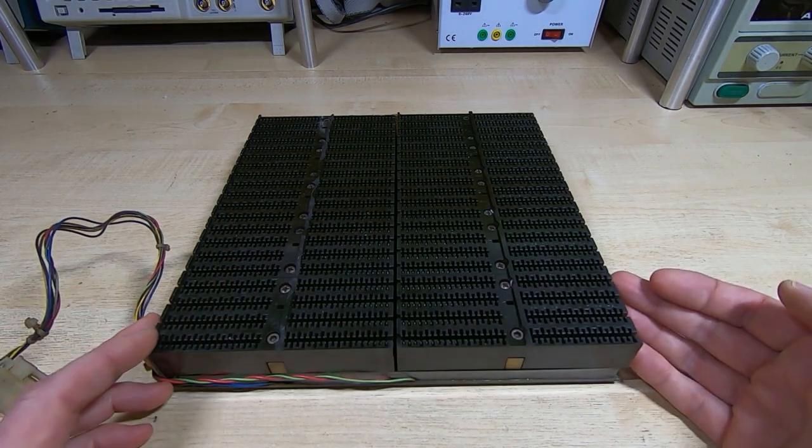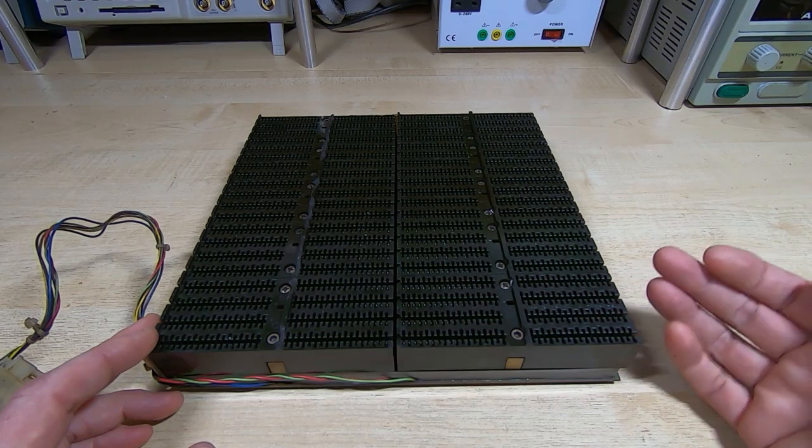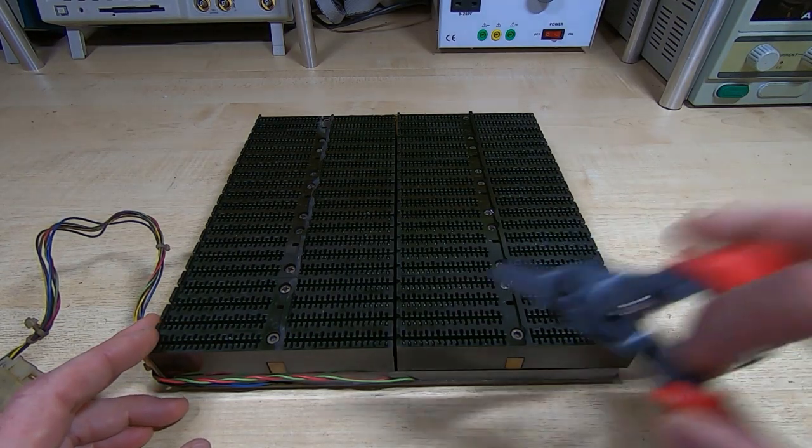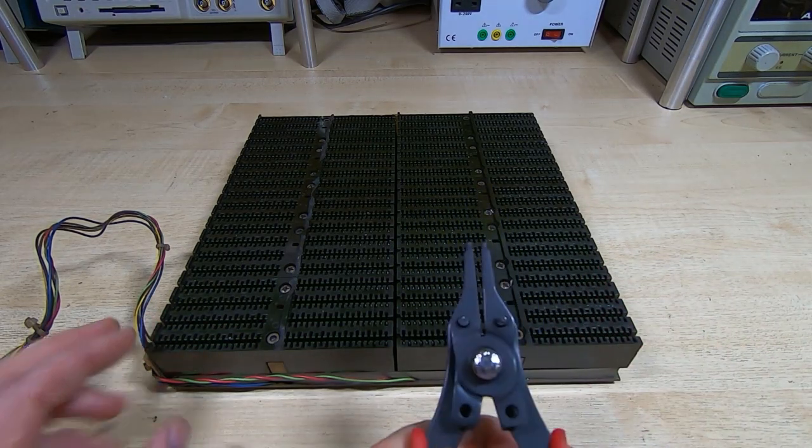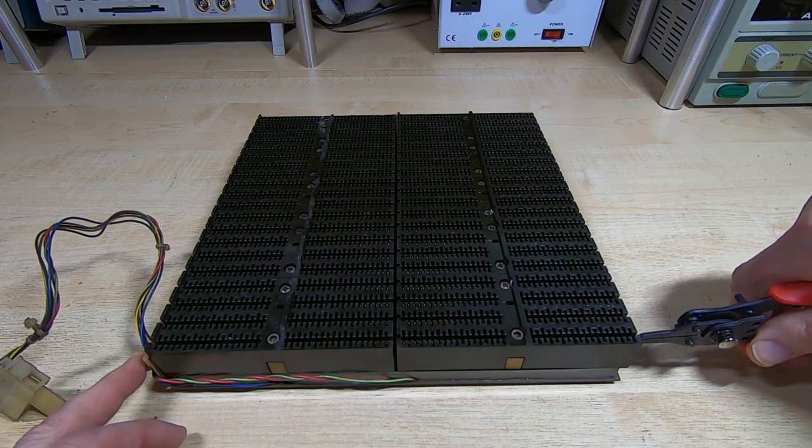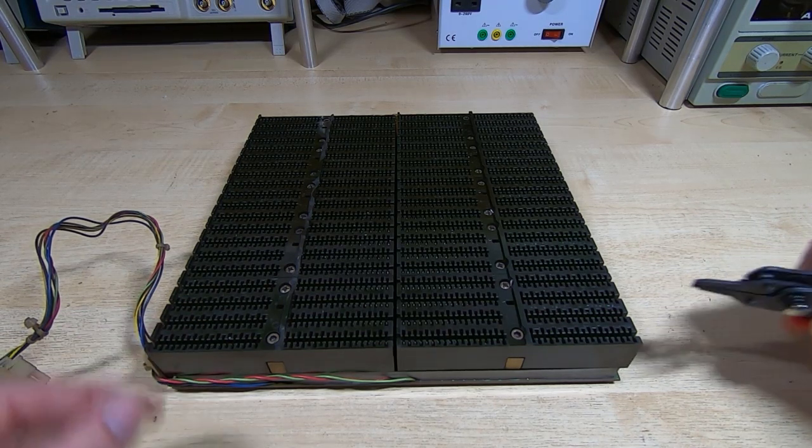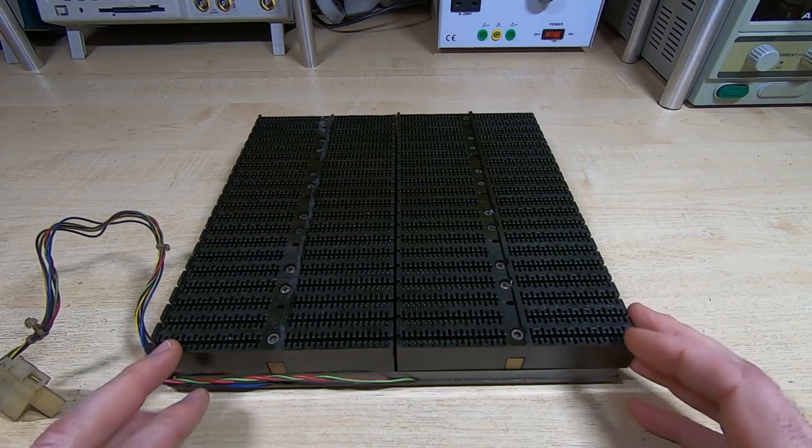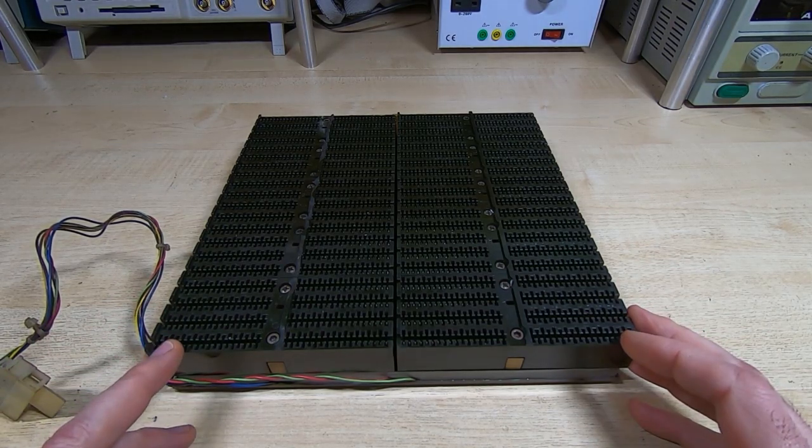I actually find the easiest way to get the boards out, if the backplane's on the bench, is to use a pair of circular pliers. I've got some heat shrink round the end, and you can just pop those in this gap at the edge, and just squeeze the handles, and it will pop the board out. And it does that without damaging anything, especially if you put heat shrink on the end of the pliers.